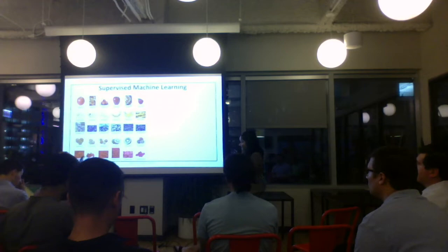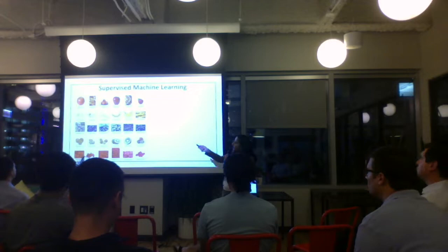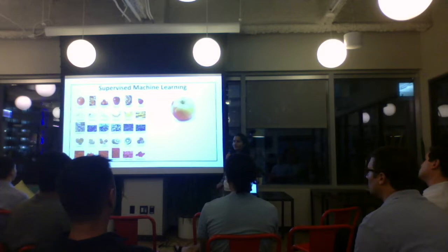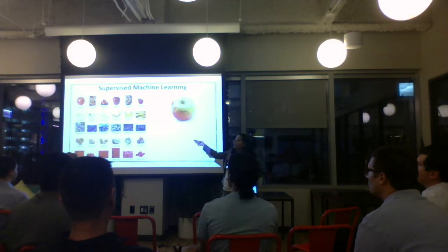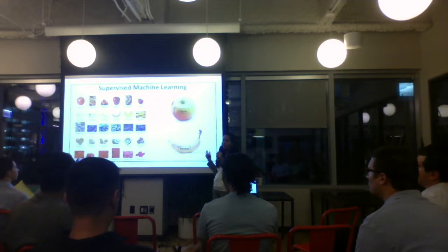Say you have a ten-year-old kid. You make the kid learn how different fruits look, then take them to a supermarket and show them a picture. What label might the kid give it? Apple — because you made the child learn how an apple looks. They can also identify a banana even if it's a slightly different variety. When you have labels for your output and you know those output labels, that is supervised learning.